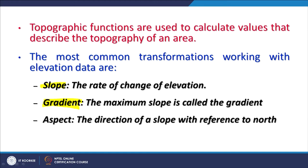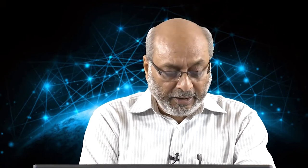There is another term called gradient — the maximum slope is called gradient. You may have a sloping surface but not all parts have the maximum slope; identifying which part has the maximum slope is the gradient. The third common derivative is aspect, which is the direction of a slope with reference to north. Those with a geological background can understand: slope is something like dip amount, and aspect is the strike direction. Slope is measured in the vertical plane, whereas aspect is measured in the horizontal plane.